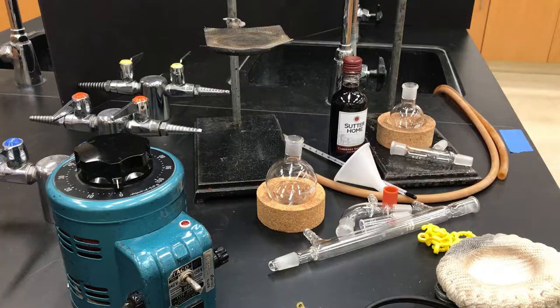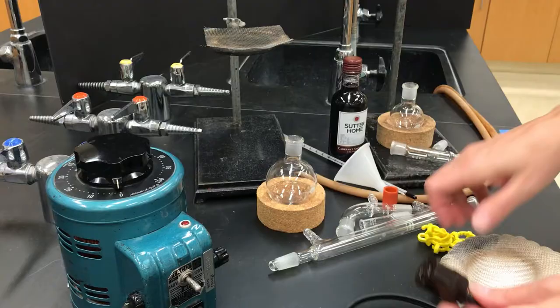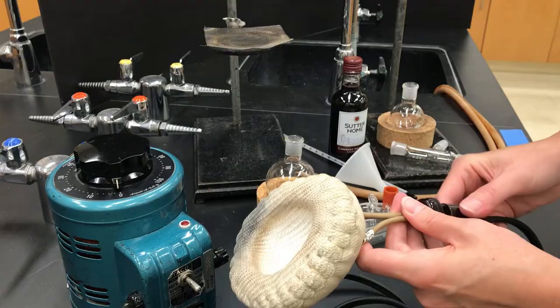The first thing I'm going to do is prepare my heat source. As organic solvents tend to be flammable, it's not a good idea to use a Bunsen burner. One alternative is a heating mantle, which is that white circular piece of equipment that I'm using.